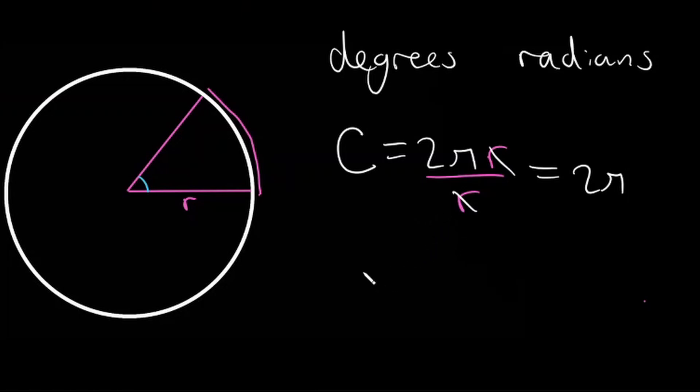So now let's get that conversion factor. So we now know that there is 2 pi radians in a circle, and we also know that there is 360 degrees in a circle. So if we divide 2 pi by 360, we will get our conversion factor.